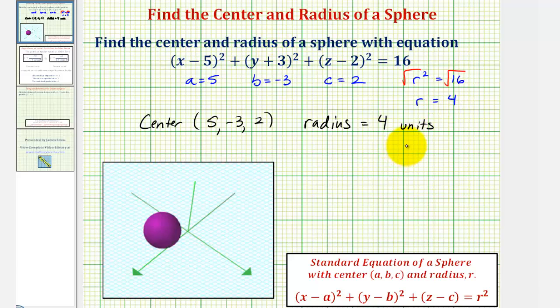One thing to be careful about is making sure you have the correct sign for the coordinates of the center. Notice here we had x minus five, so the x-coordinate was positive five. Here we had y plus three, the y-coordinate was negative three. And we had z minus two, and the z-coordinate was positive two.